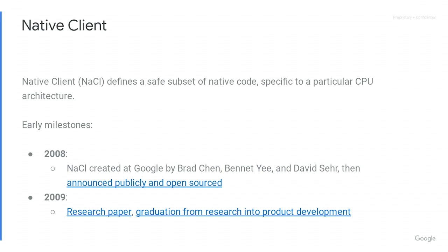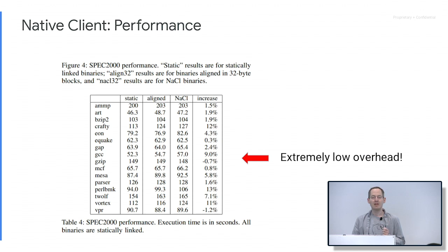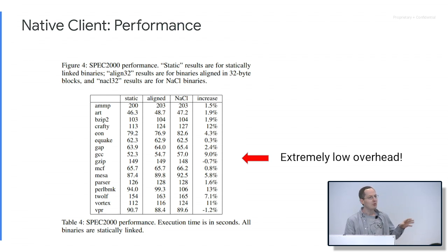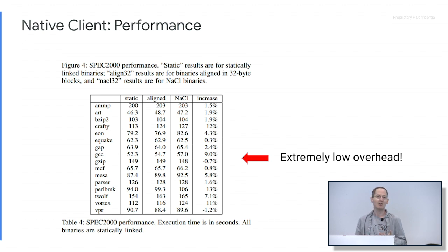NaCl made a lot of quick progress. In 2009 there was a research paper, and it graduated from research into a plan toward becoming a product. This is some speed data. The key thing is the column on the right, which shows the extra overhead of running Native Client as opposed to running the same code natively. Essentially in all the benchmarks, it's single-digit overhead — maybe 5% slower than the full maximum speed. Very, very low overhead, and very impressive that you can do this in a safe way.